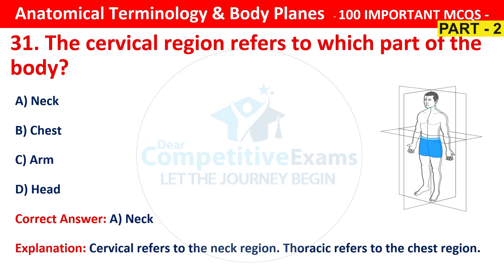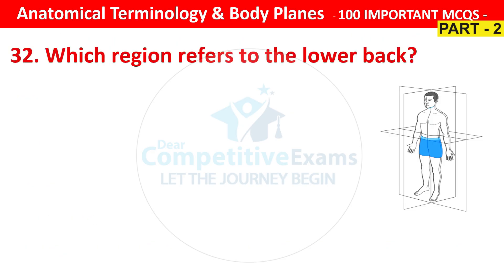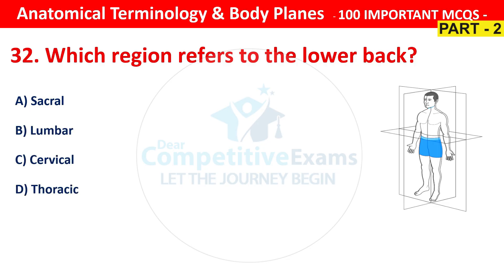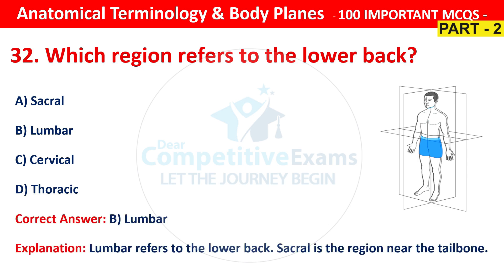Question number 32. Which region refers to the lower back? Your options are sacral, lumbar, cervical or thoracic. The right answer is B, that is lumbar. Lumbar refers to the lower back. Sacral is the region near the tailbone.